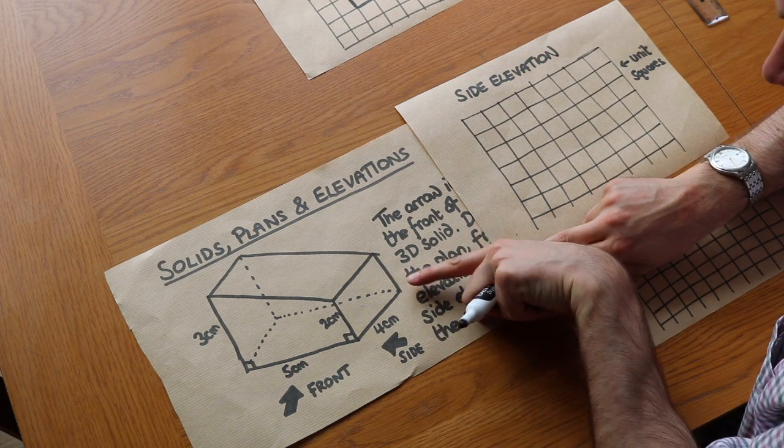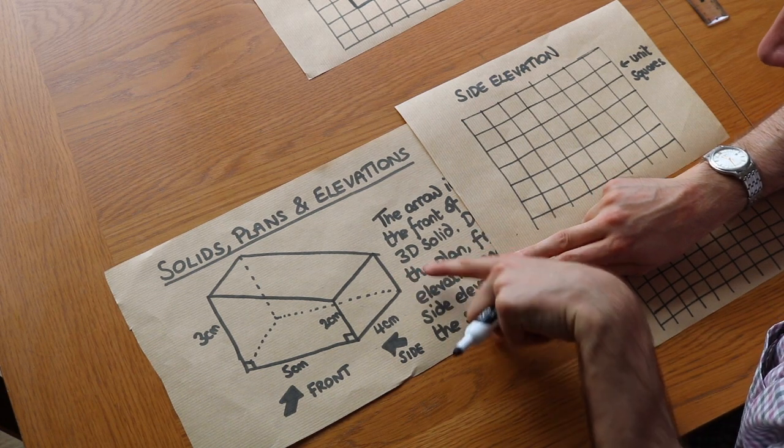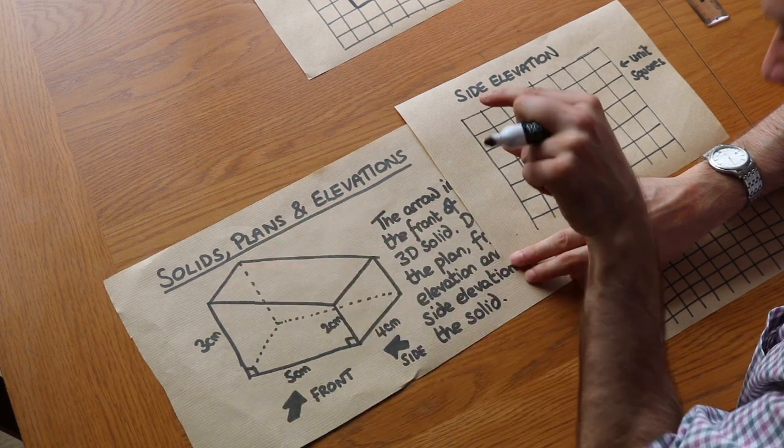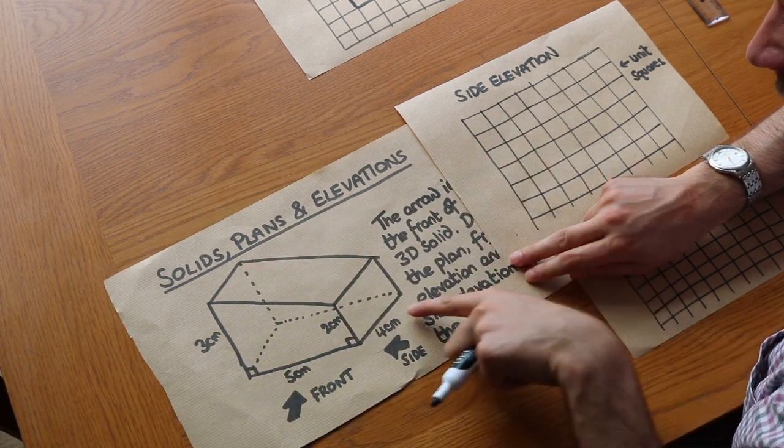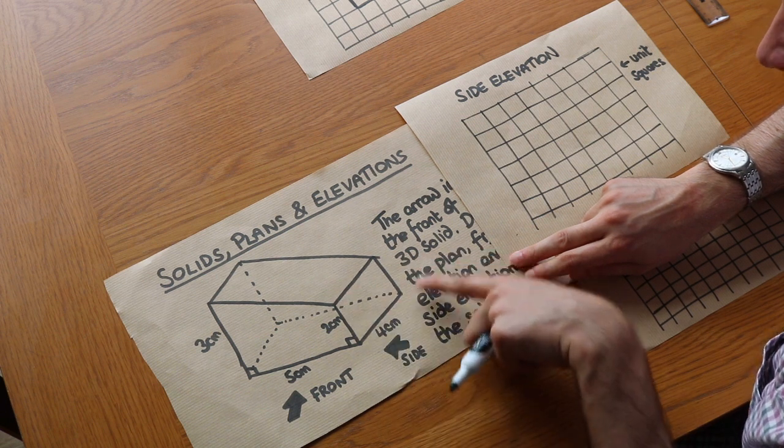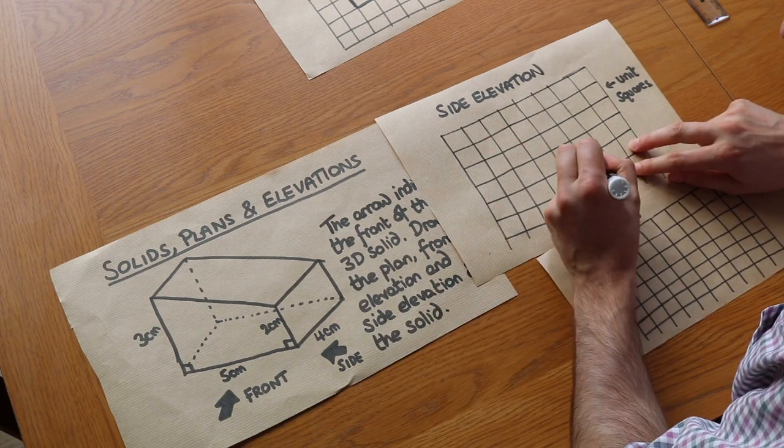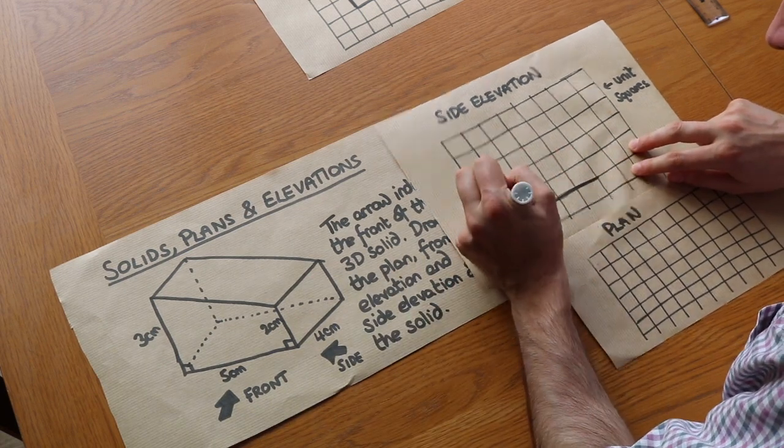Well when we're looking from this point here we would see this rectangle here and this sloped face, we'd also see another rectangle on top of that. So let's worry about the rectangle at the bottom first. That's four wide and two high. So let's draw that. Four wide and two high.